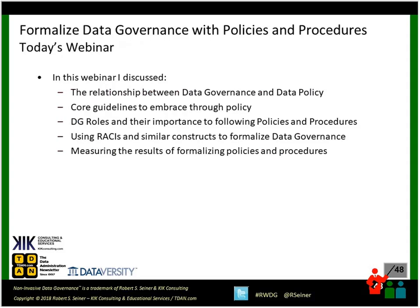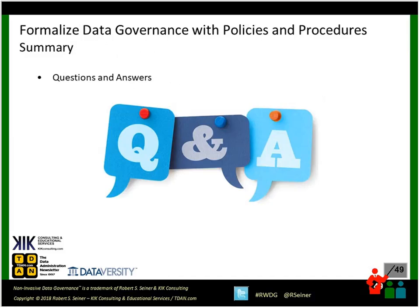In this webinar I've discussed five things: the relationship between data governance and data policy and whether a data governance policy would be important within your organization; the four core guidelines — data as an asset, clearly defined accountability, following the rules, and managing quality consistently across the lifecycle; the different roles of the operating model and how they're important to making certain that policy and procedures are followed; RACI charts and similar constructs; and measuring the results of formalizing policies and procedures. With that I feel like I've shared a lot of information, and I'll turn it back over to Shannon to see if we have any Q&A.